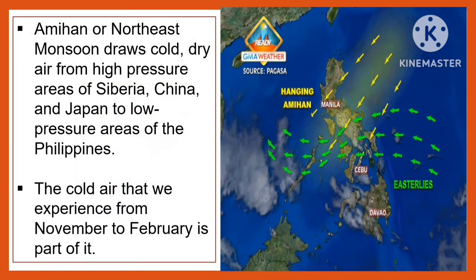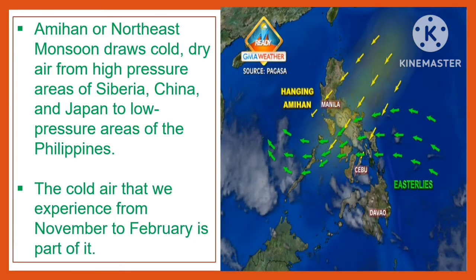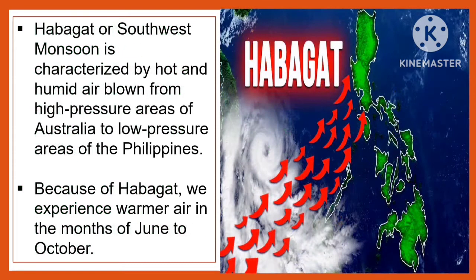Amihan, or the Northeast Monsoon, draws cold, dry air from high-pressure areas of Siberia, China, and Japan to low-pressure areas of the Philippines. The cold air that we experience from November to February is part of it.